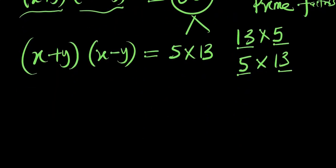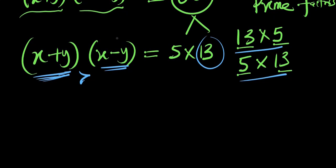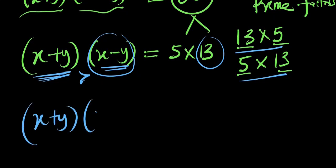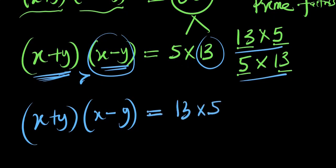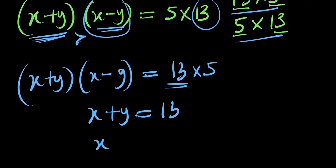Observe that x + y is greater than x − y, so the bigger factor corresponds to x + y. We write (x + y)(x − y) equals 13 times 5, equating x + y to 13 and x − y to 5, since the positive sum will be greater than the difference.